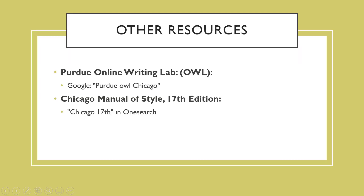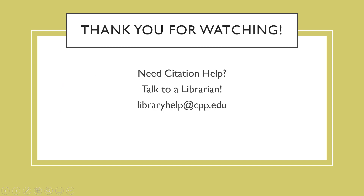These are of course only basic examples of footnotes, which can contain a wide variety of information including URLs for online resources. For more examples of footnotes, please check out the Purdue OWL's page on Chicago Style Citation, which you can find by typing 'Purdue OWL Chicago' into Google or the search engine of your choice. You can also reference the Chicago Manual of Style itself by typing 'Chicago 17th' into OneSearch. Finally, you can always contact a librarian for citation assistance. You can email us at libraryhelp@cpp.edu. Thank you for watching.